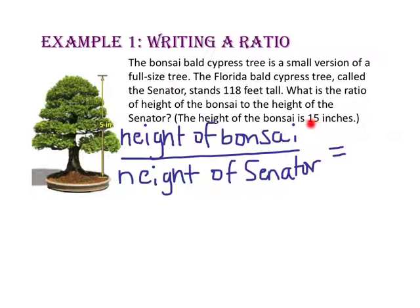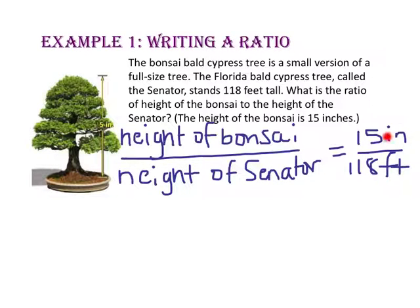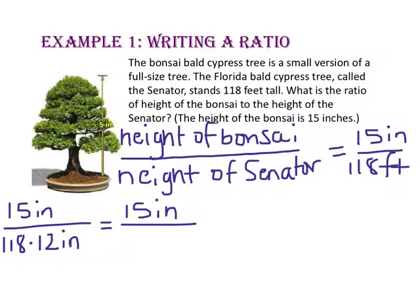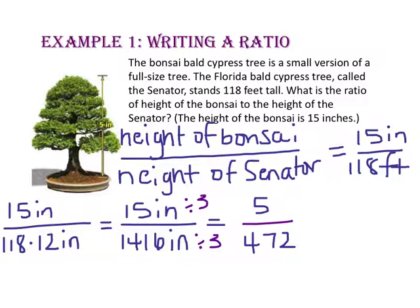The height of the bonsai is 15 inches and the height of the Senator is 118 feet. Since the units are not the same, we are going to convert feet into inches. Since there are 12 inches in a foot, there are 1416 inches in 118 feet. Now that our ratio is in the same units, let's simplify by dividing the numerator and the denominator by 3. So the ratio of the bonsai to the Senator in simplest form is 5 to 472.